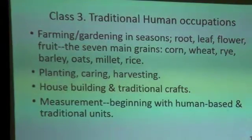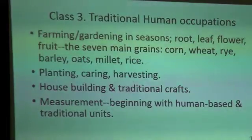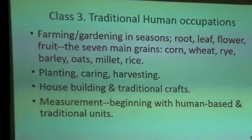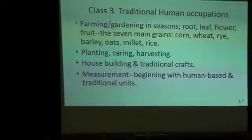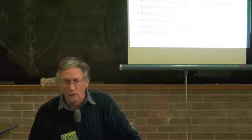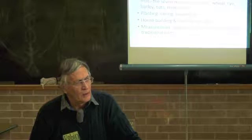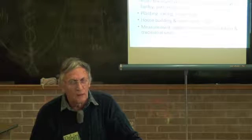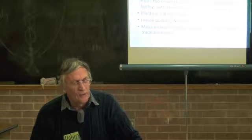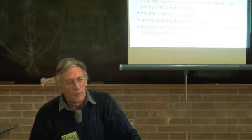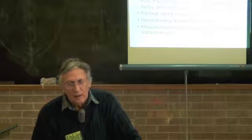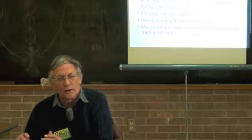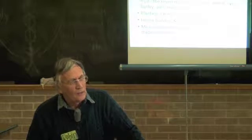Here are the traditional human occupations, because farming and gardening is one of them. When human beings came out of the hunter-gatherer phase of evolution, there came a time of actually cultivating the earth — turning the plow to the earth, digging, cultivating. This is a traditional occupation. And another traditional occupation: when you cultivate the land you often settle down and create a house, creating a shelter.